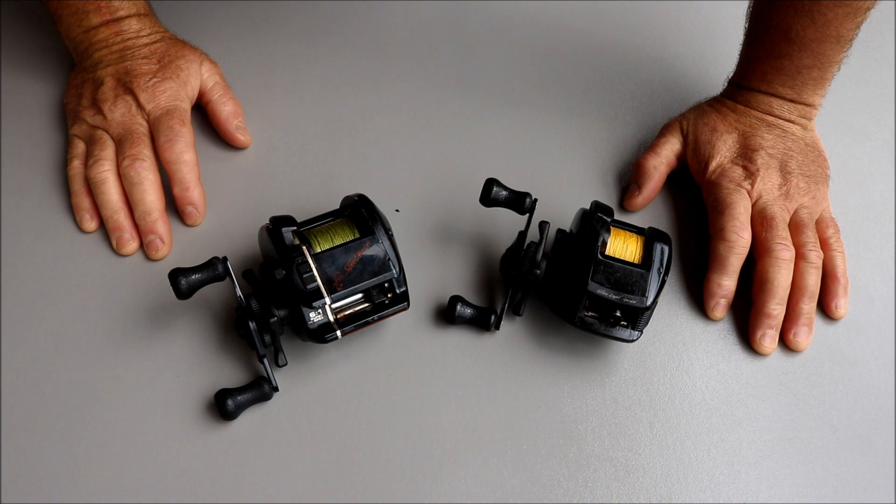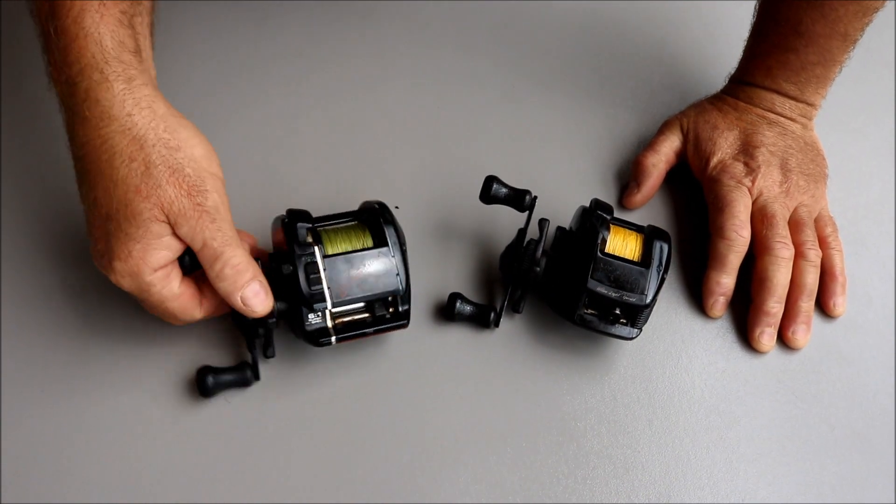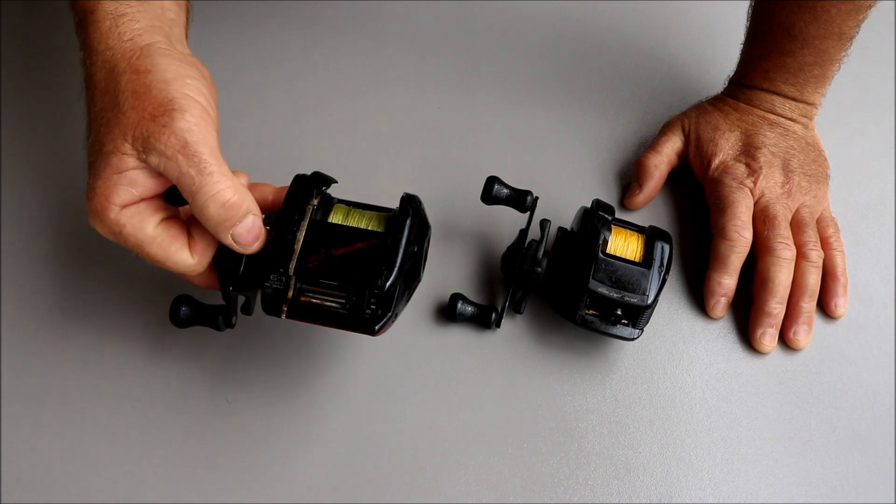Well here I have two bait caster reels guys. I've had these two reels well over 20 years. I've used the bigger reel up north to catch barramundi, queenfish, and trevally.